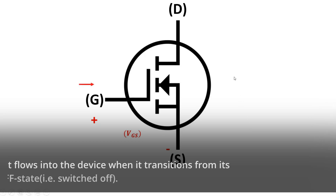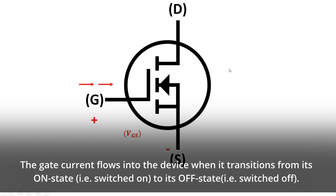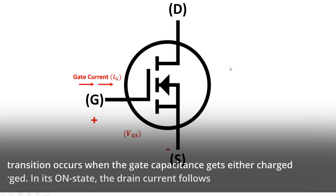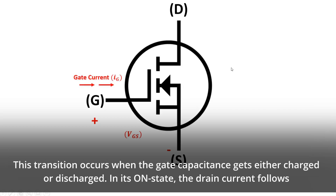The gate current flows into the device when it transitions from its on state, i.e. switched on, to its off state, i.e. switched off. This transition occurs when the gate capacitance gets either charged or discharged.